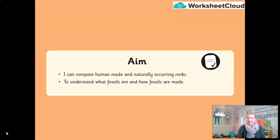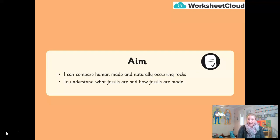So what are our aims for today's lesson? The first aim is to compare human-made and naturally occurring rocks. In our last lesson, we learned about the rock cycle and the naturally occurring rocks that exist as part of it. Today, we're going to learn about man-made rocks and compare them to naturally occurring ones. We'll also take a look into the fascinating world of fossils — what they are and how they are made.